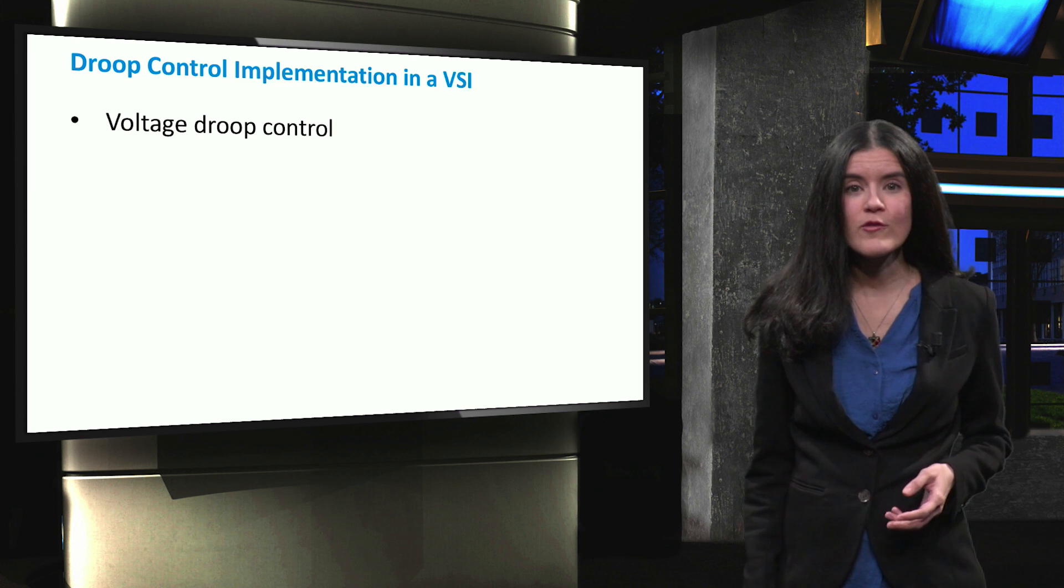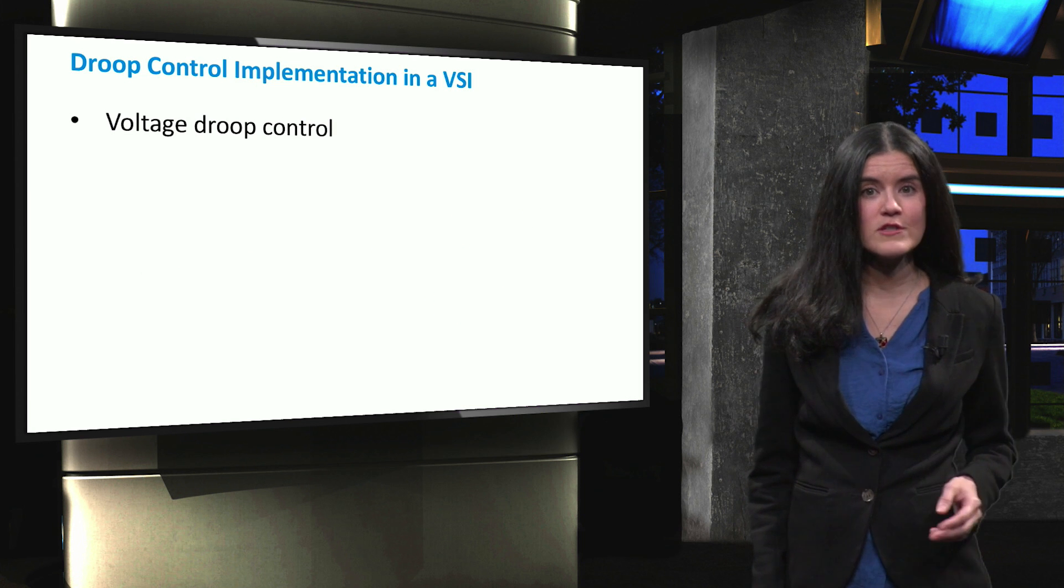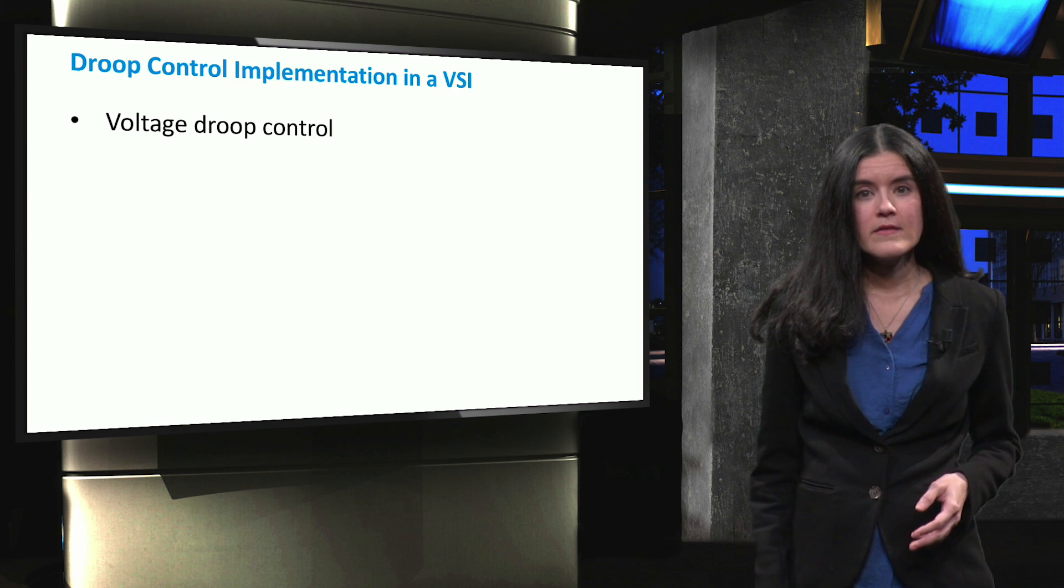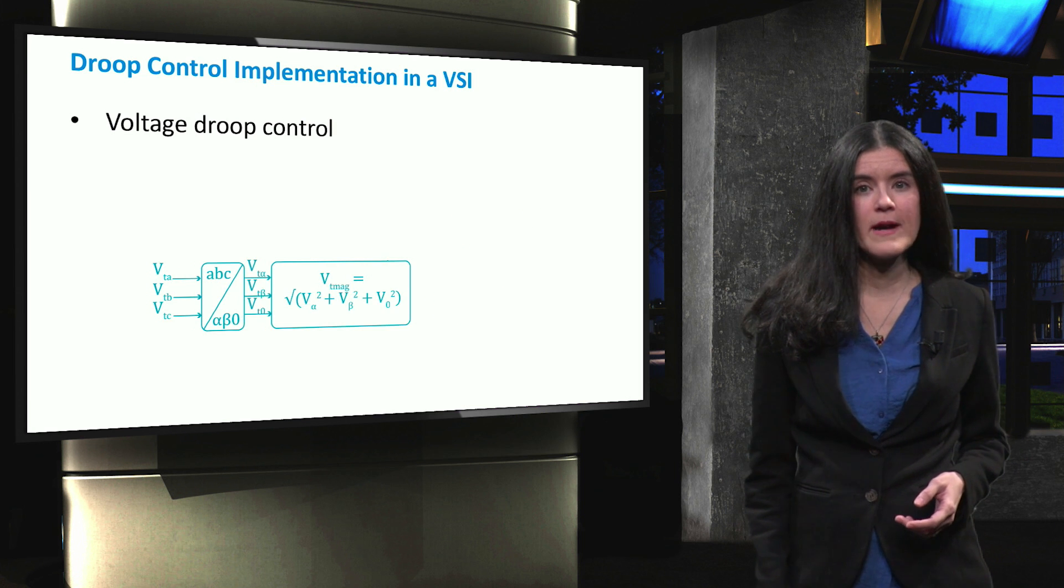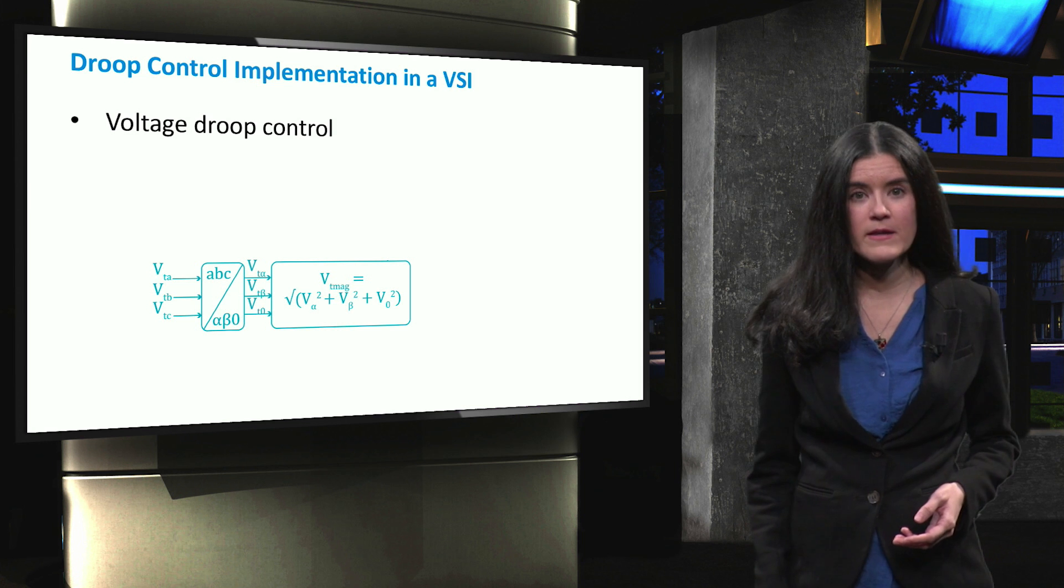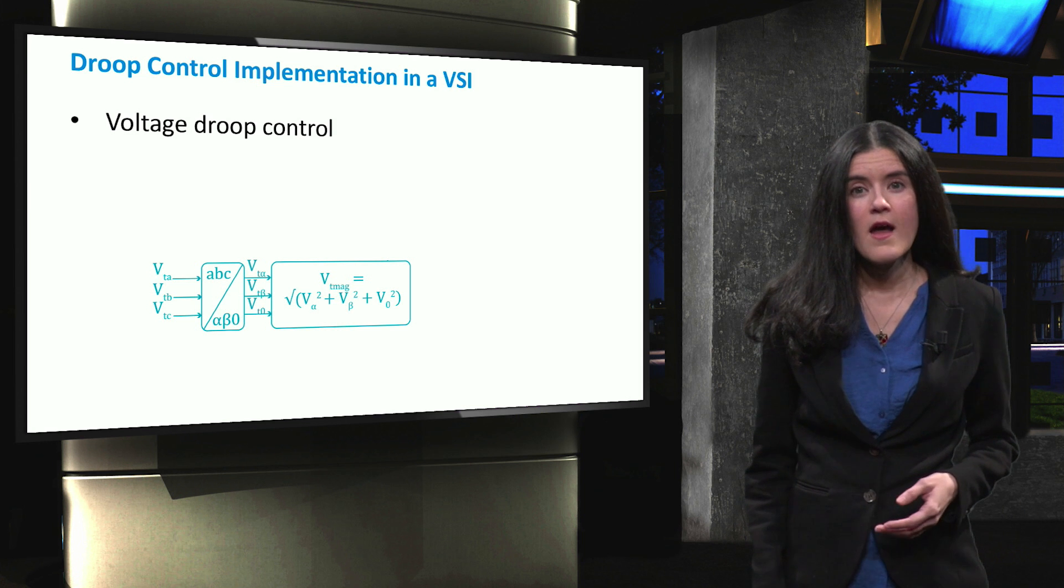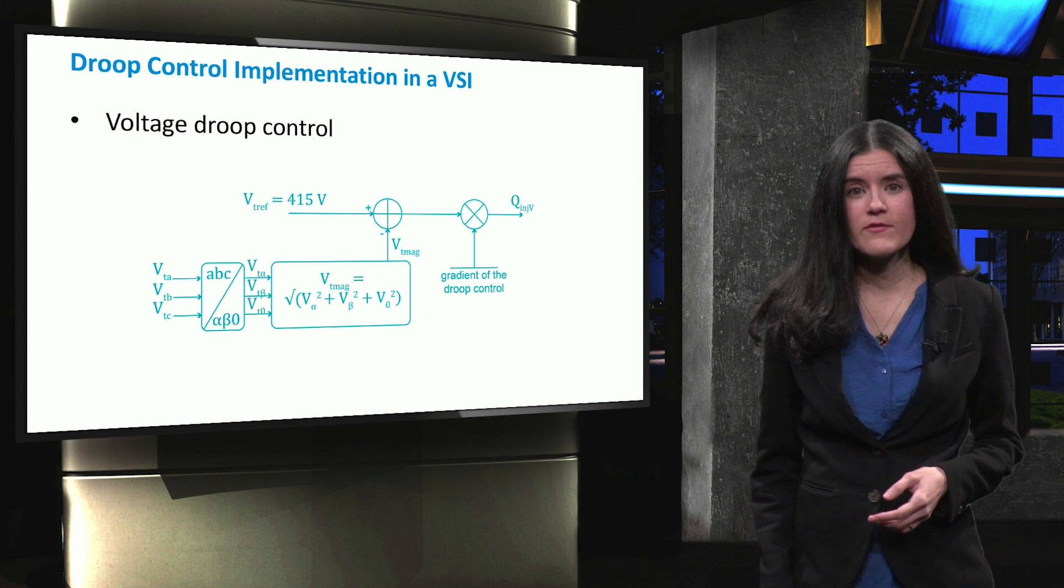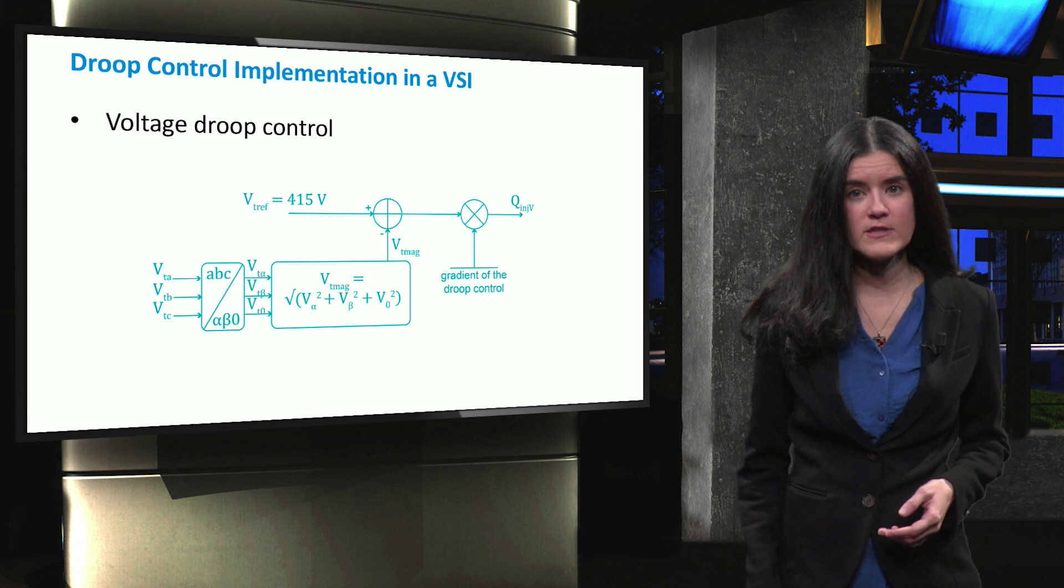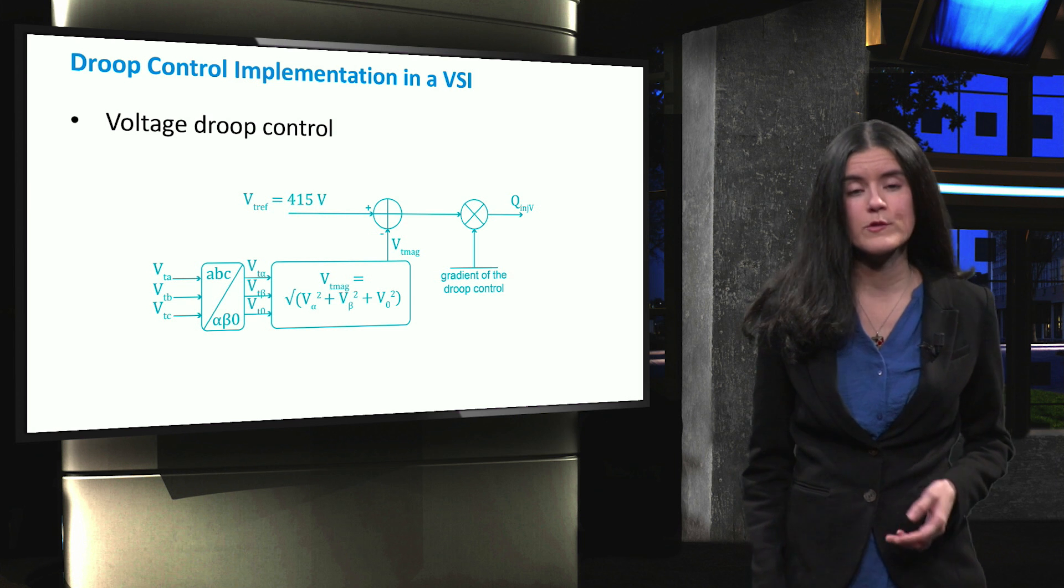Conventional voltage droop control can also be implemented in a voltage source inverter. The three-phase voltage is measured and the line-to-line voltage magnitude is calculated from the alpha-beta framework and then compared with the rated voltage. The voltage difference is translated into reactive power changes according to the gradient of the droop control.